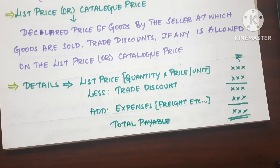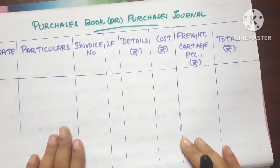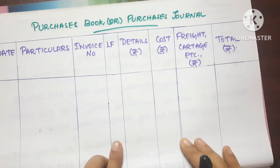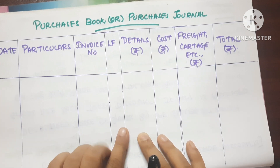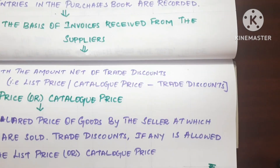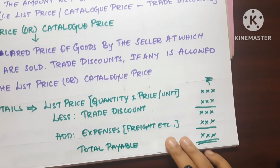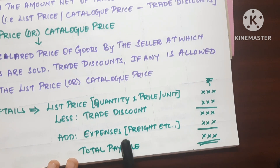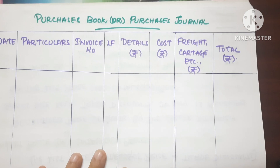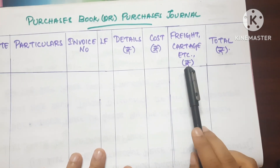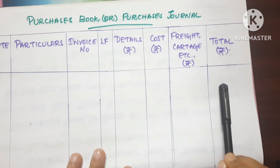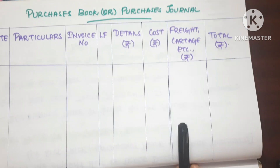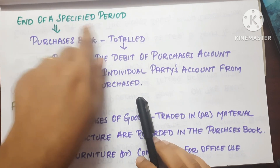Now we will see the format of the purchase book. The columns are: Date, Particulars, Invoice Number, Ledger Folio, and Details amount. In the details column, we fill the cost, cartage, expenses, etc. — cost plus expenses. At the end of a specific period, we total all the entries recorded in the purchase book.